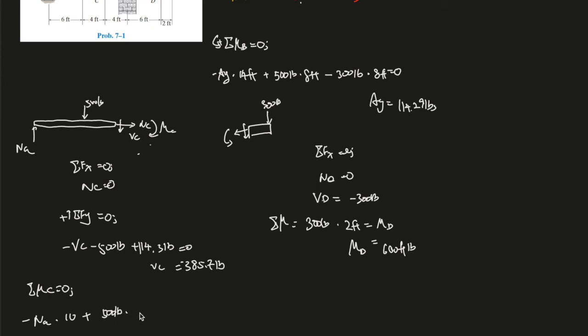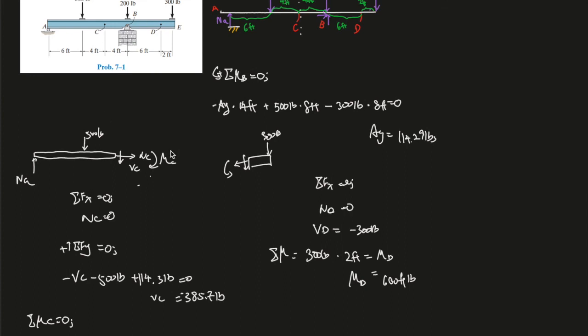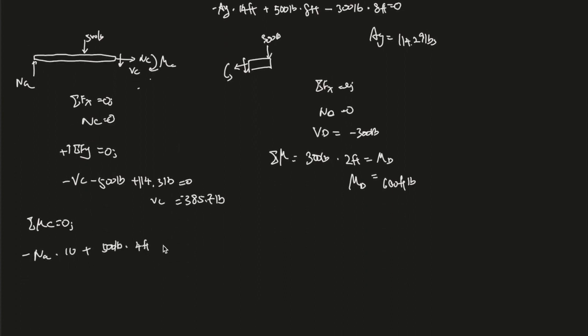And this is going in a counterclockwise direction, plus moment SC. This whole thing should give us zero. So moment SC should give you 500 times 4 minus 114.3, should give us around 857 pounds.